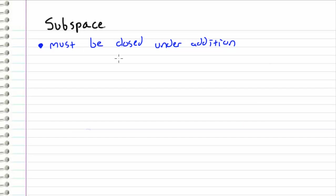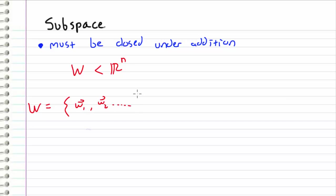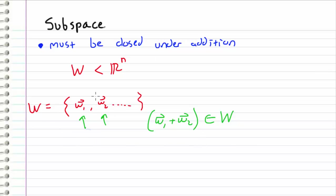The second rule is that a subspace must be closed under addition. If W is a subspace of Rn containing vectors W1, W2, and so on, then if we take any two vectors, say W1 and W2, and add them together, their sum must also be an element of W. If this is true for all vectors in W, then W is closed under addition.